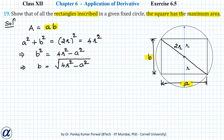Note that I have ignored the negative solution of this equation because B, being a side of a rectangle, will always be positive, so I have taken only the positive solution. Now the area of the rectangle can be written as A into the square root of 4R squared minus A squared.